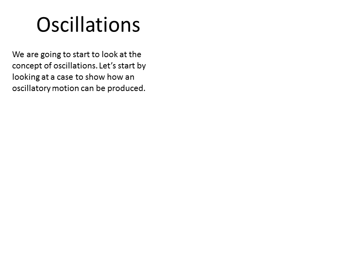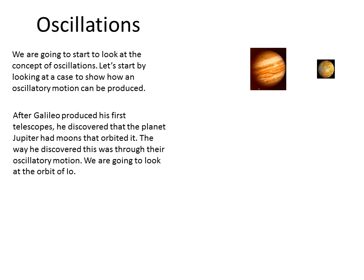So, let's see how we can produce what we are going to call oscillatory motion. And this is actually something that Galileo first saw. He looked up with the telescope he created, he looked up at Jupiter, and he saw that he was able to see that there are some moons, and they're called the four Galilean moons.